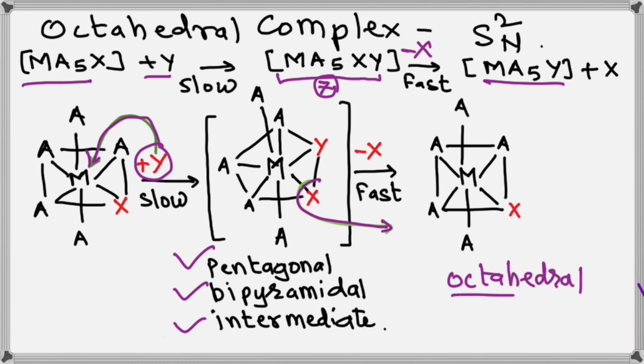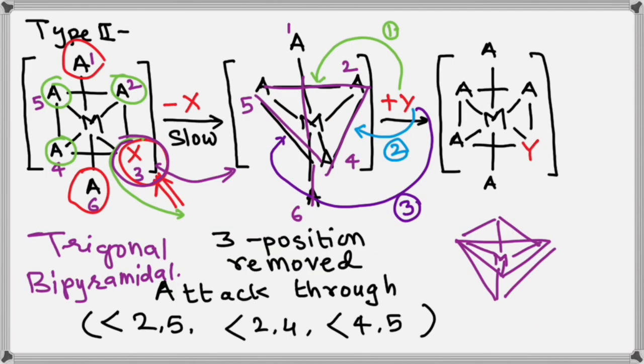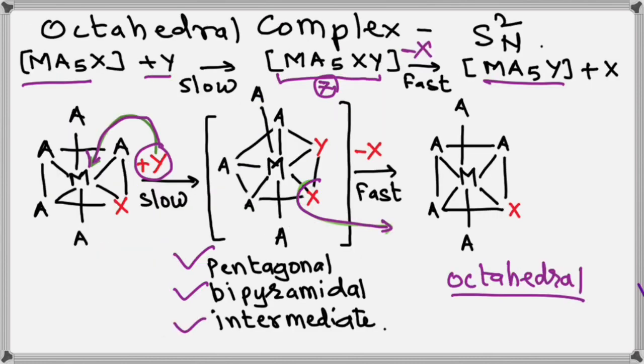So when we have type 1, where X is located at axial position, the shape of intermediate is square pyramidal. When X is located at equatorial position, the shape of intermediate is trigonal bipyramidal. And when we see SN2 type of mechanism, the shape of intermediate is pentagonal bipyramidal intermediate. That's it.